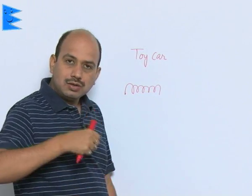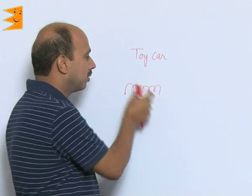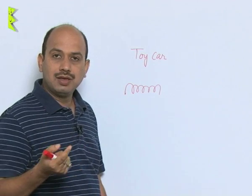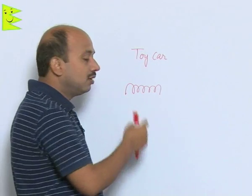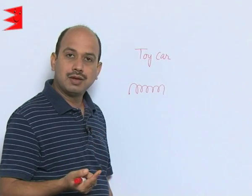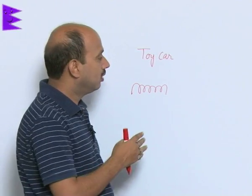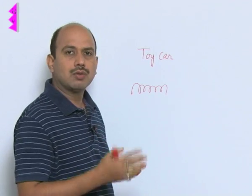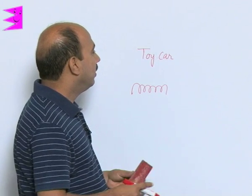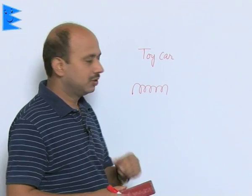When we wind the toy car, actually we store potential energy in the spring. As we make it free, then potential energy of the spring, elastic potential energy of the spring, gets converted into kinetic energy as the car runs in the forward direction. So, basically there is a conversion of elastic potential energy into kinetic energy.